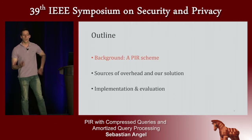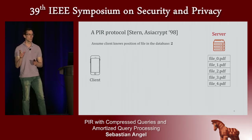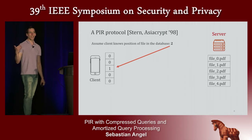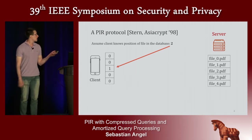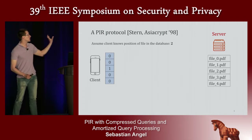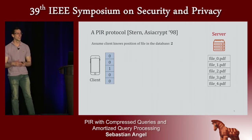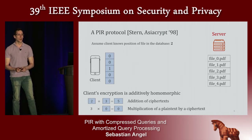In PIR, there's an underlying assumption that the client knows the exact position in the server's database of the element to be retrieved. Say the client is interested in file 2, so it knows the file is at position 2. The client generates a query vector where every entry is 0 except for the entry at position 2, which is 1. The client then encrypts each entry individually — each blue box is a different encryption of 0 or 1. This is semantically secure, so they're all indistinguishable from each other, and also additively homomorphic.